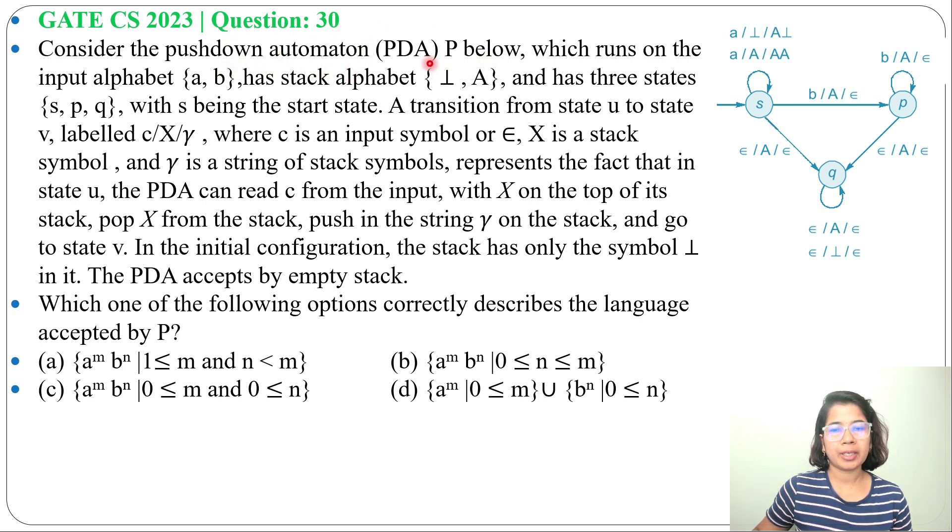Consider the pushdown automaton PDA P below. This is our PDA, which runs on the input alphabet A, has stack alphabet tau and A, and has three states S, P, Q.